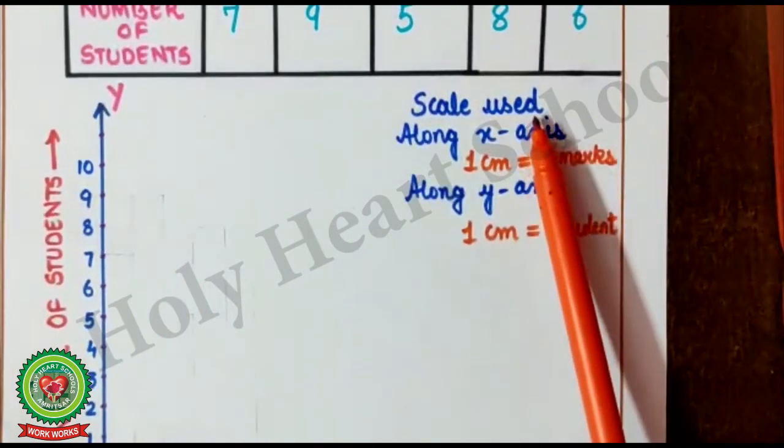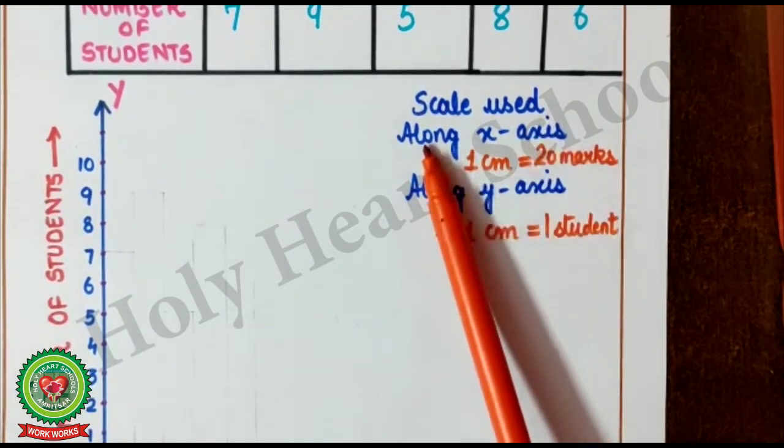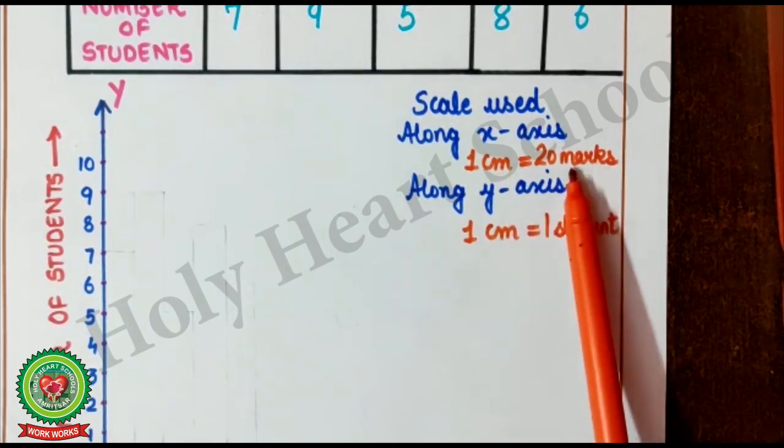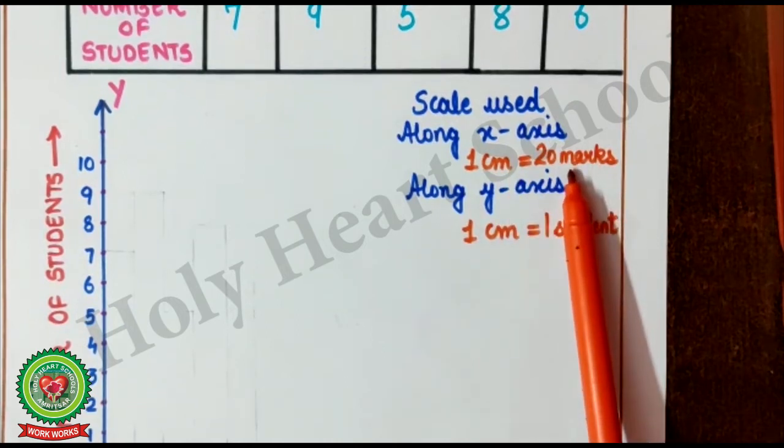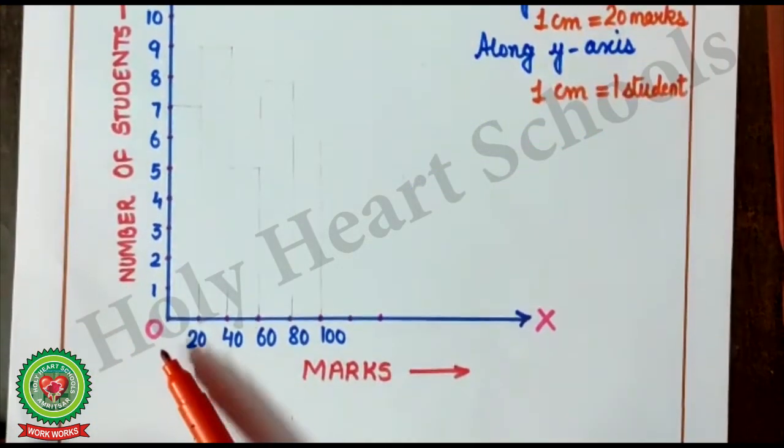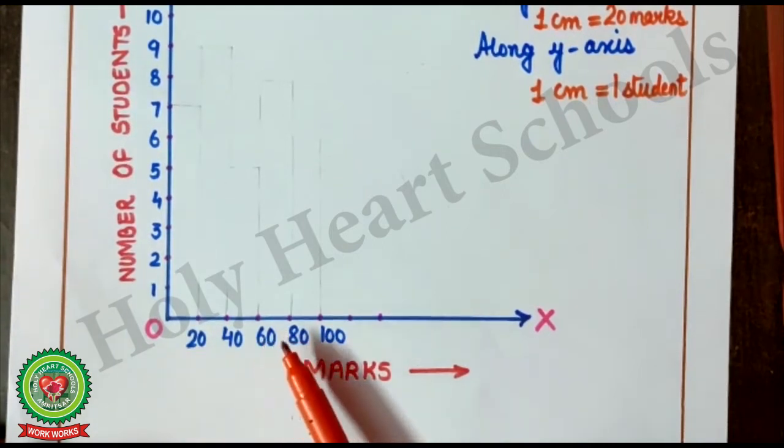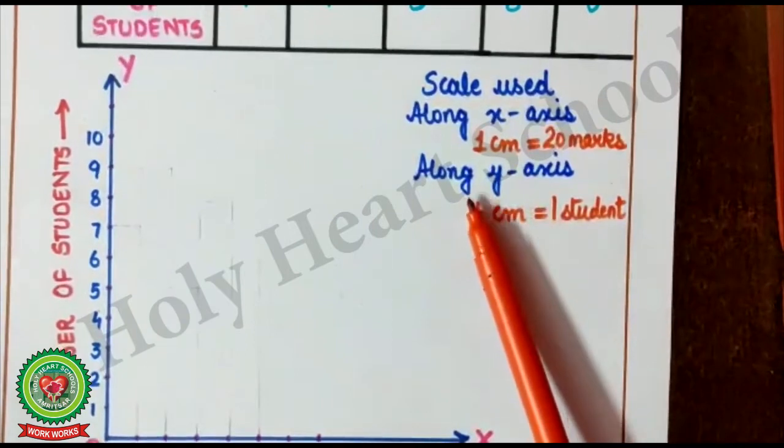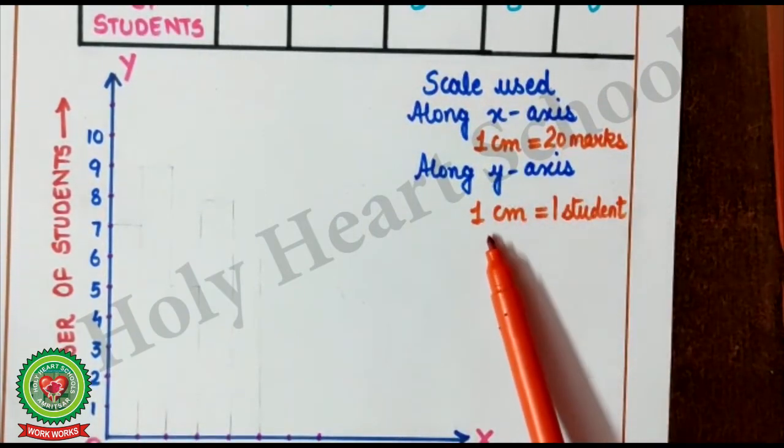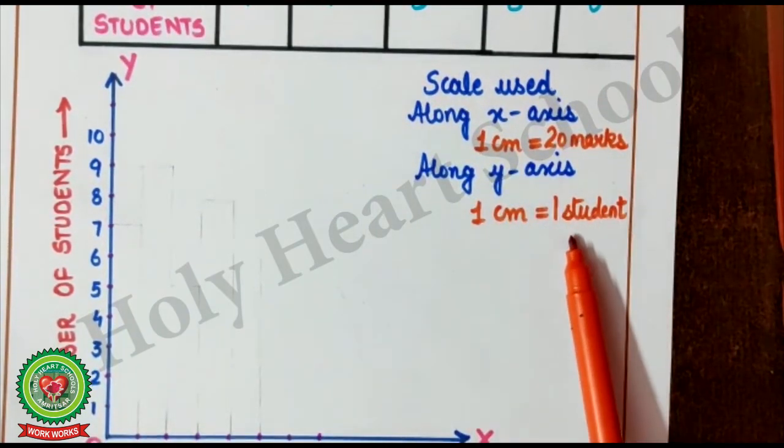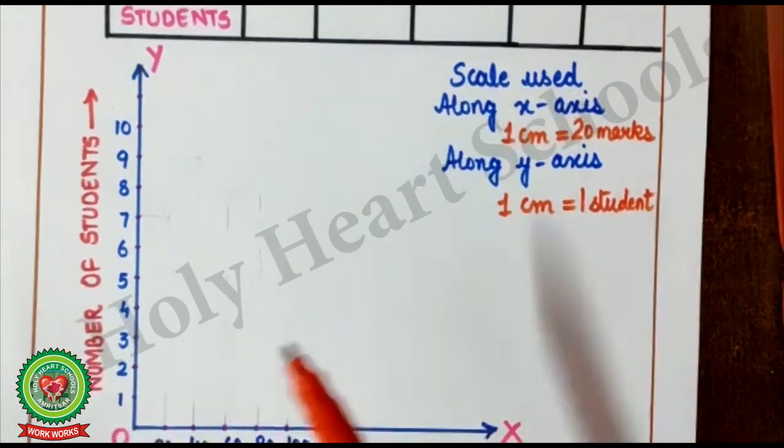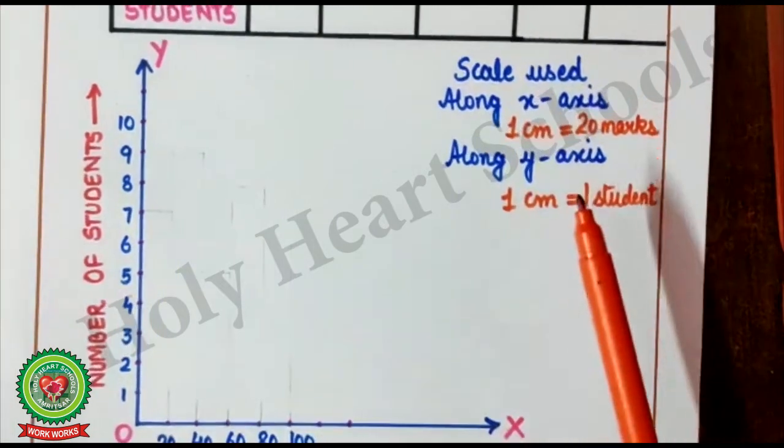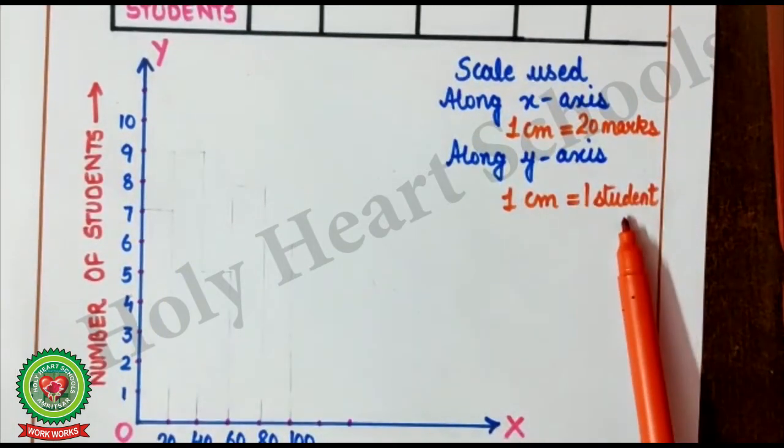Now, scale used. Along x-axis, 1 cm equals to 20 marks. Because, here, gap of the intervals is of 20 marks. Then, along y-axis, 1 cm equals to 1 student. Because, here, I have taken table of 1. Therefore, 1 cm, 1 student.